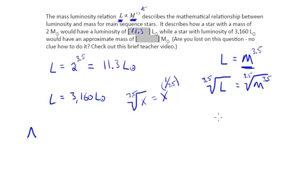But what we end up with here is an equation which is to say, if I want to know what the mass of something is, I can take its luminosity and take the 3½ root of it to get what the mass is in solar masses. So to the second part then, the mass would equal the 3½ root...